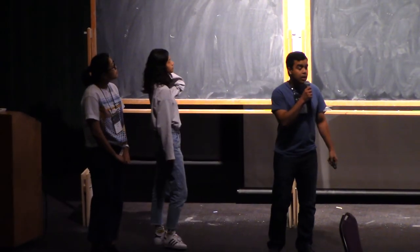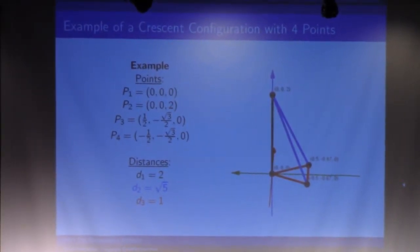Just to begin with an example, this is a crescent configuration in three dimensions. d₁ is the black line, so there's only one of those. For d₂, there are two distances of square root of five, and there are three distances of one.